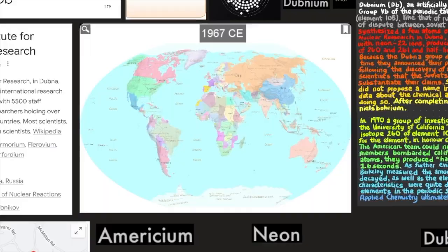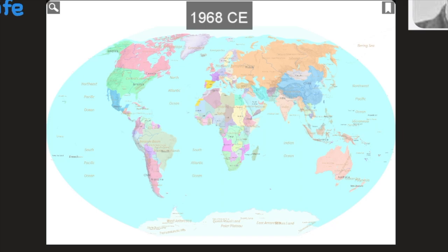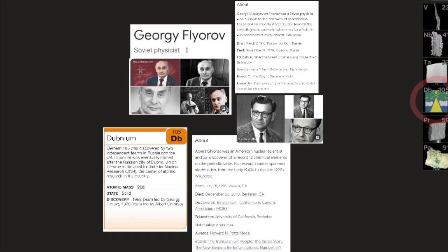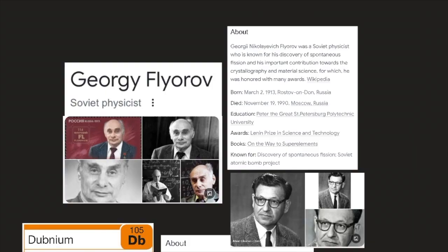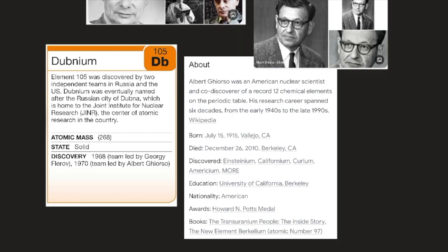Dubnium's date of discovery was in 1968. Here's a map of 1968 CE, the date of discovery of Dubnium. Its density is 21.6 grams per cubic centimeter; its melting point and boiling point are unknown. Dubnium, element 105, was discovered by two independent teams in Russia and the US. It was eventually named after the Russian city of Dubna, home to the Joint Institute for Nuclear Research (JINR), the center of atomic research in the country. Its atomic mass is 268, its state is solid, and its discovery was in 1968 by a team led by Georgi Flerov and in 1970 by a team led by Albert Ghiorso. Georgi Flerov was a Soviet physicist known for his discovery of spontaneous fission and contributions to crystallography and materials science, for which he received many awards.